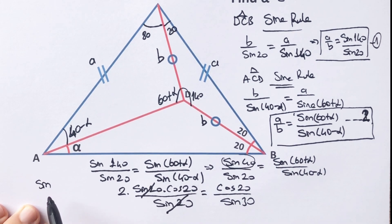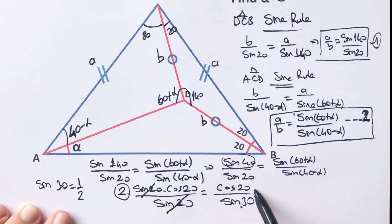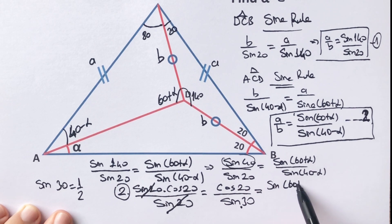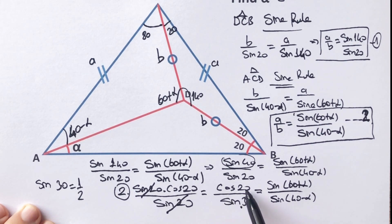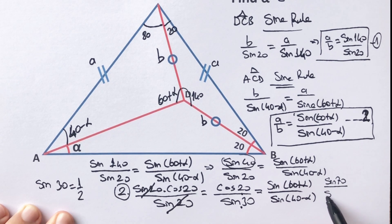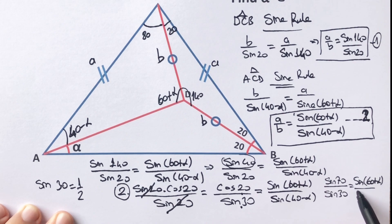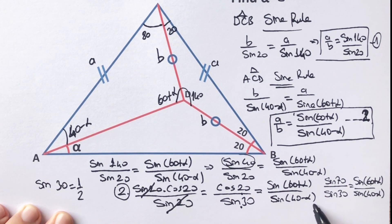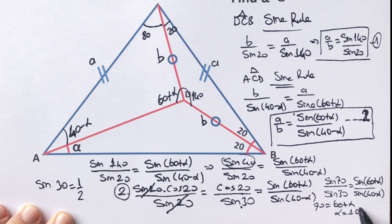We know that sine 30 equals 1 over 2, so 2 times cosine 20 over sine 30 equals sine(60 plus alpha) over sine(40 minus alpha). We can also use sine 70 instead of cosine 20. Now you can see easily: 70 equals 60 plus alpha, so alpha equals 10 degrees.